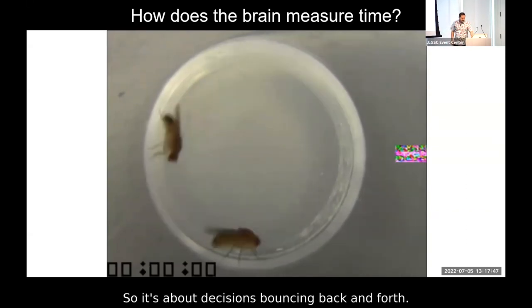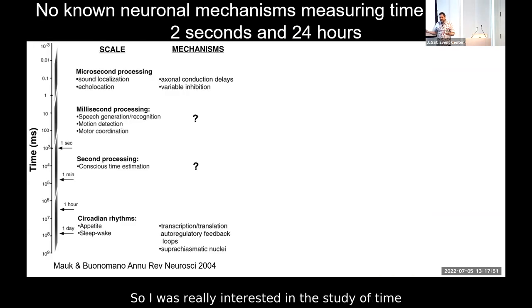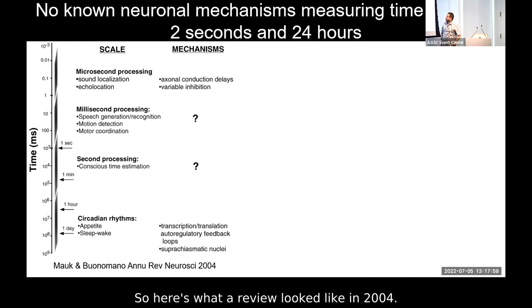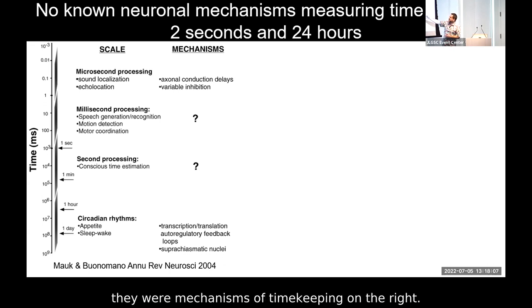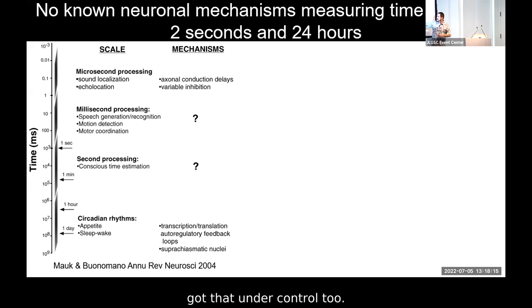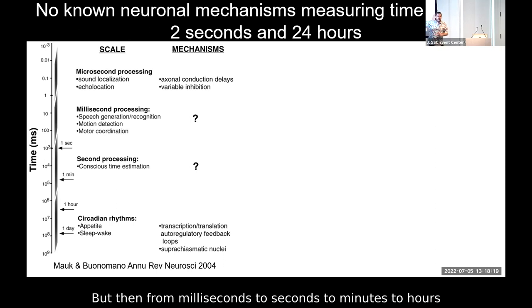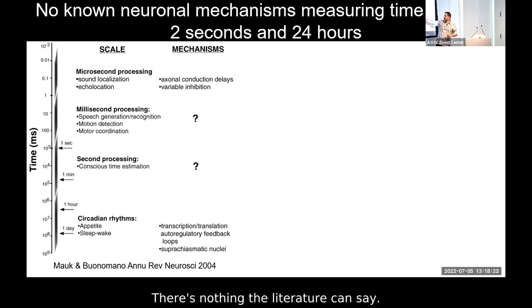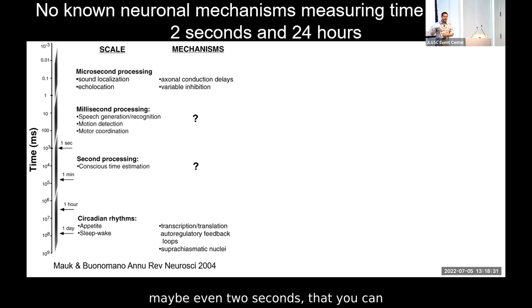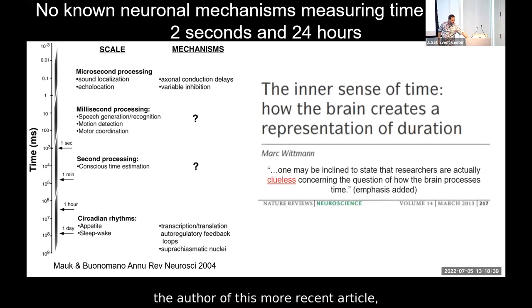I was interested in the study of time and what the literature could provide — honestly not that much. A 2004 review showed that for microseconds and circadian rhythms we have neural mechanisms, but from milliseconds to seconds to minutes to hours there were just question marks. Even generously, up to maybe two seconds you can get circuit mechanisms explaining timekeeping, but between two seconds and 24 hours, everyone would agree: the researcher may be inclined to state it is the clearest open question concerning how the brain processes time.